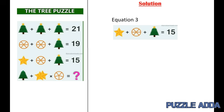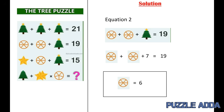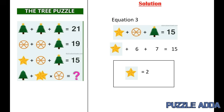Now in equation 3 we have a star plus a circle with 6 lines plus a tree with star, which is equal to 15. From equation 1, a tree with star is equal to 7. From equation 2, a circle with 6 lines is equal to 6. Putting in those values, we get a star is equal to 2.